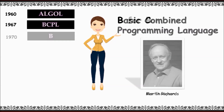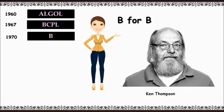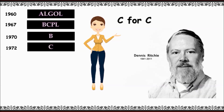Next, in 1970, Ken Thompson created a new language called B. B was created for the Unix OS at Bell Laboratories. Both BCPL and B were typeless languages. Now here comes our hero — C. C was evolved from ALGOL, BCPL, and B.